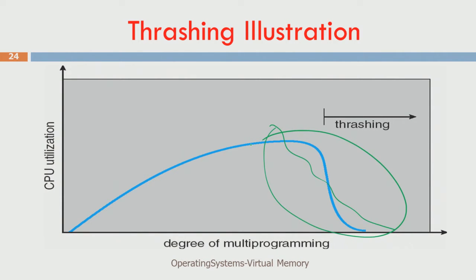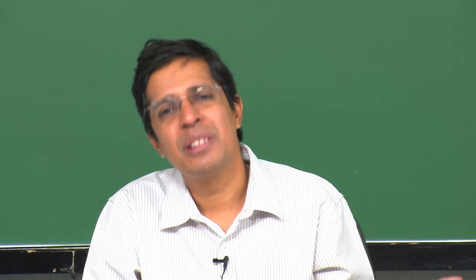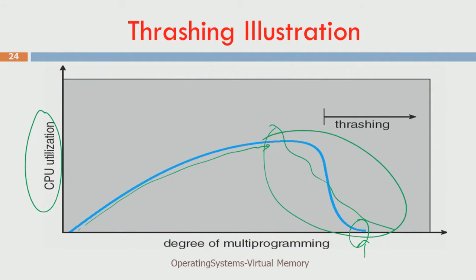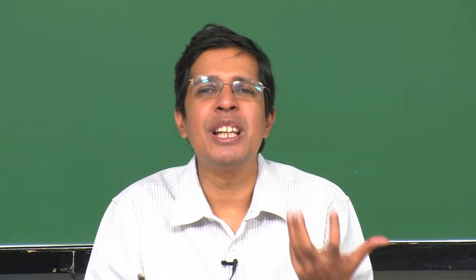As your degree of multiprogramming increases, your CPU utilization starts falling. At some point it will actually become 0 and the system will start hanging. Up to a point, as degree of multiprogramming increases, you see an upward trend in CPU utilization, but beyond some point it falls — because the CPU starts handling more page faults rather than doing constructive execution. The reason for more page faults is that for every process, at least 20 percent of the most important pages — called the working set of the process — should be in memory.